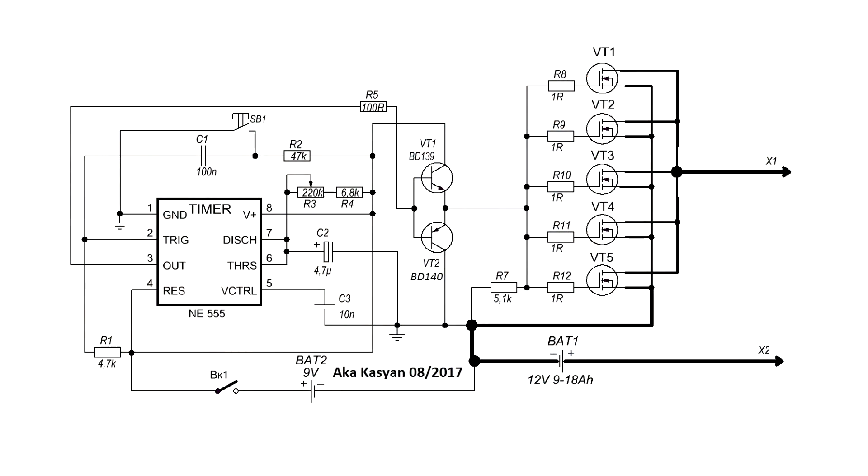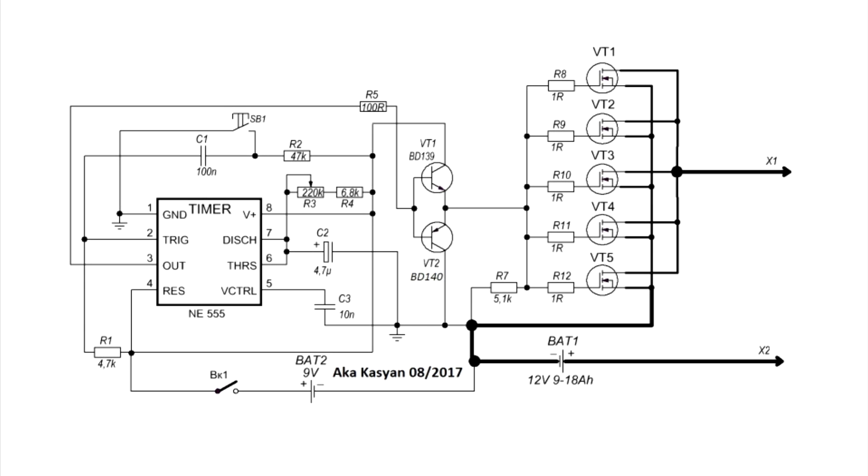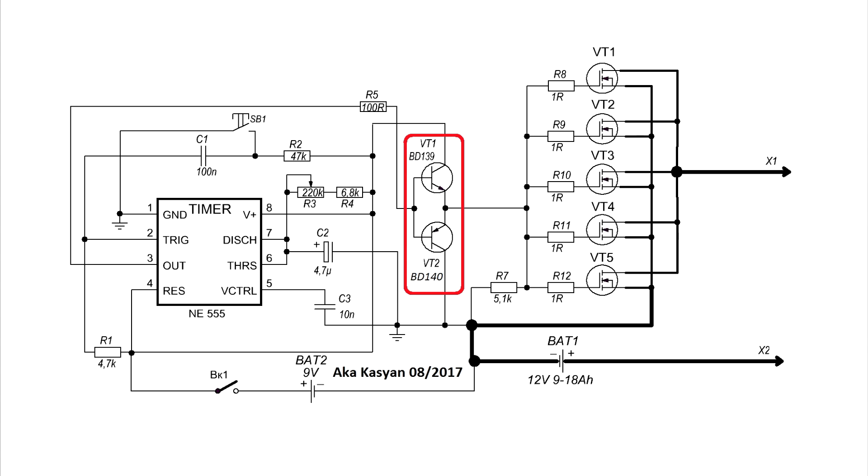By the way, here is the circuit of the welder only without a relay. In this case, to the output of the chip NE555 added a repeater based on a complementary pair of medium power transistors BD140 and BD139.